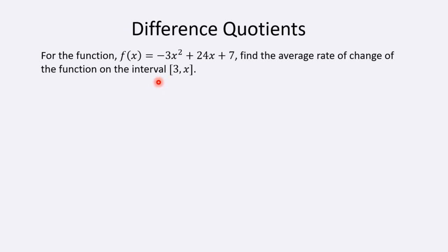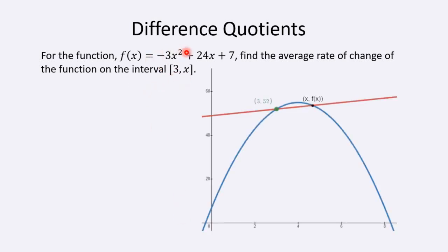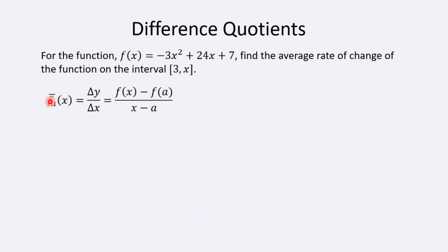Here's an example: for the function f(x) = -3x² + 24x + 7, find the average rate of change on the interval from 3 to x. Geometrically, we have this parabola — the quadratic function f(x) — with a secant line on the interval between x = 3 and x = x. We're looking at the slope of that red secant line intersecting the parabola at two places. The slope is y₂ minus y₁ over x₂ minus x₁, which is f(x) minus f(a) divided by x minus a.